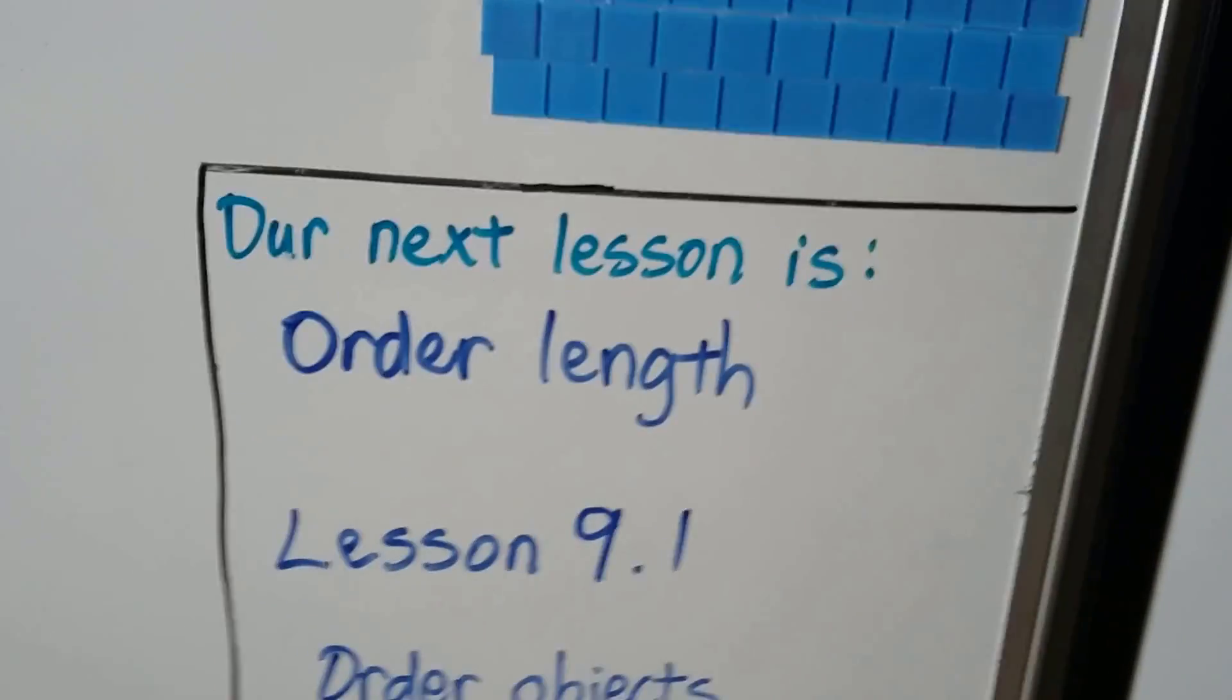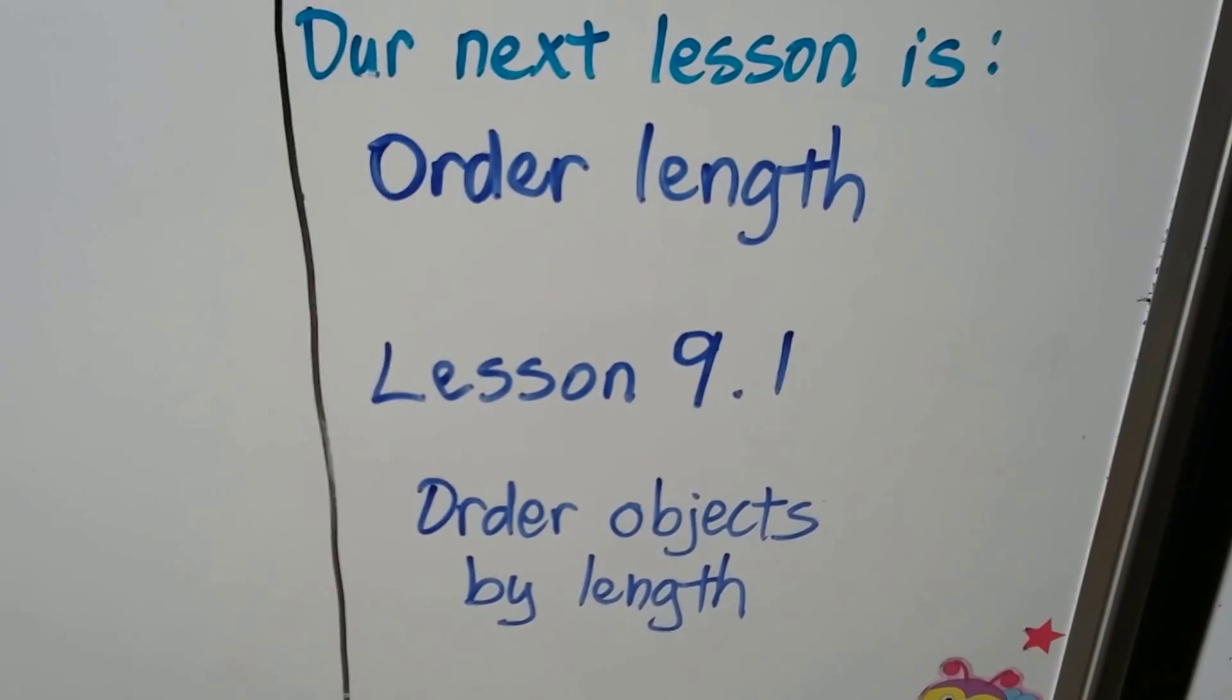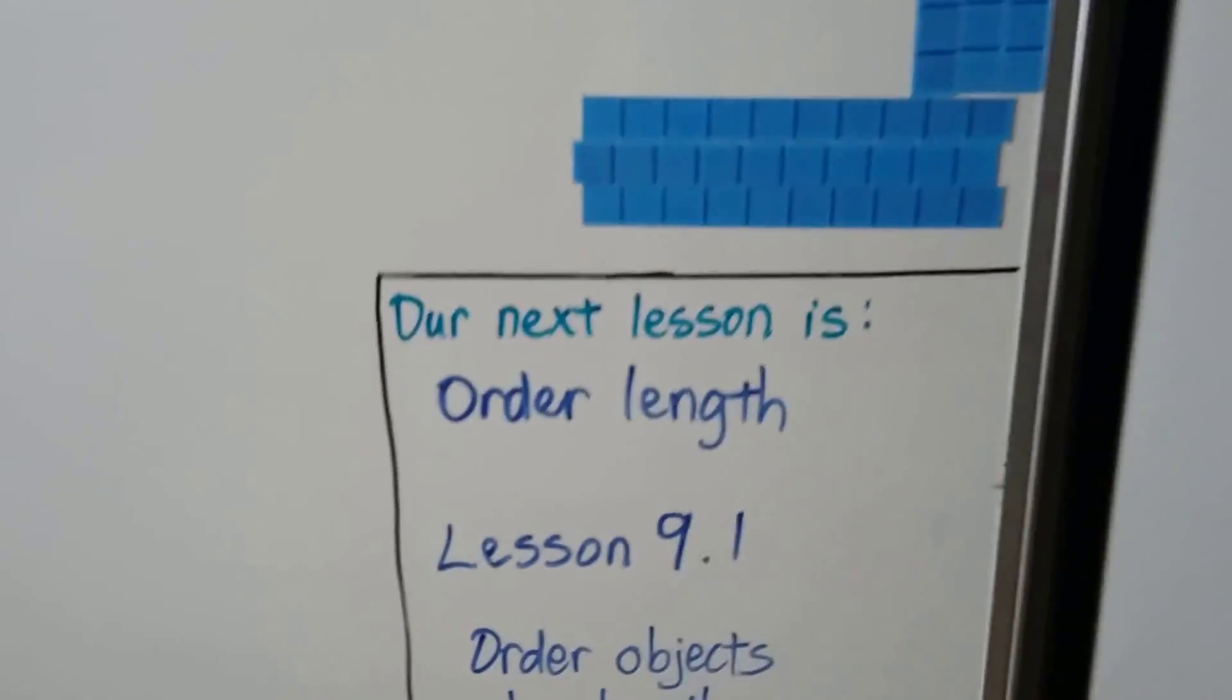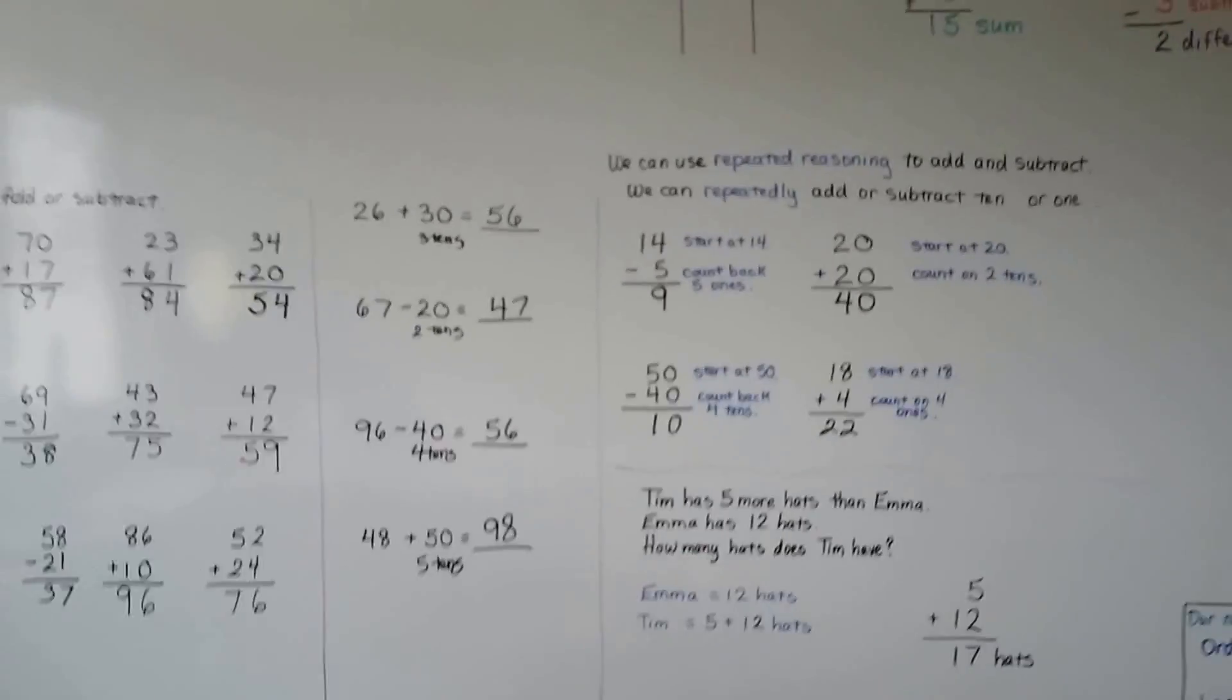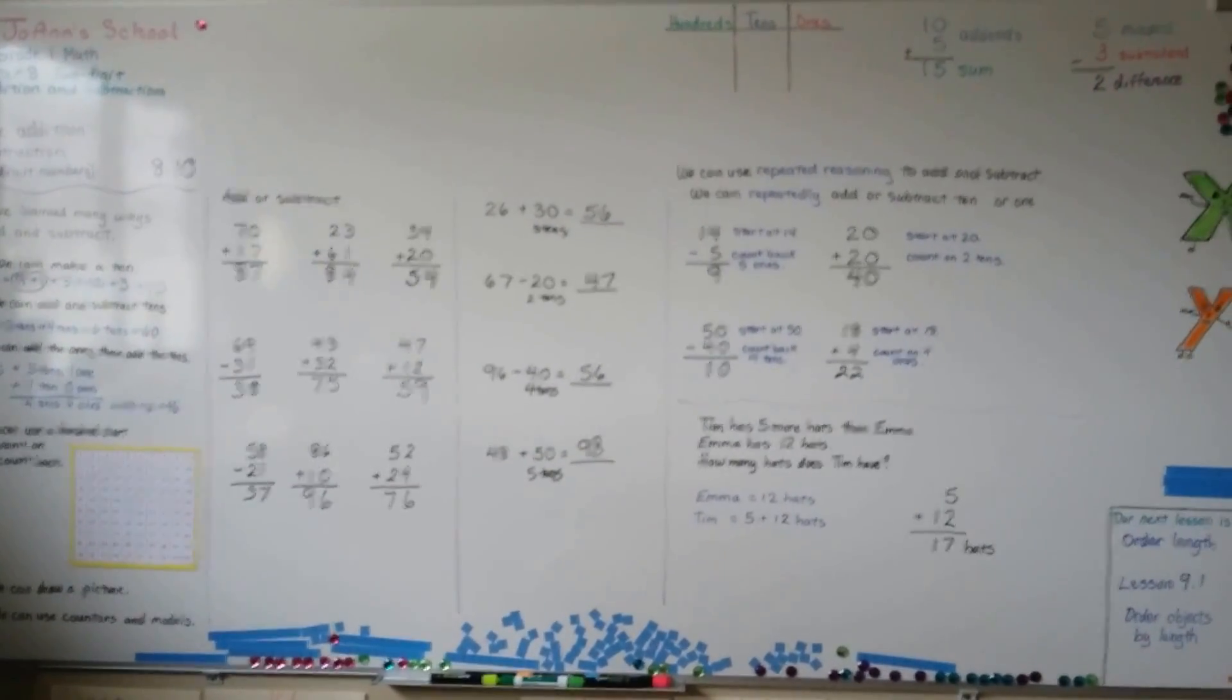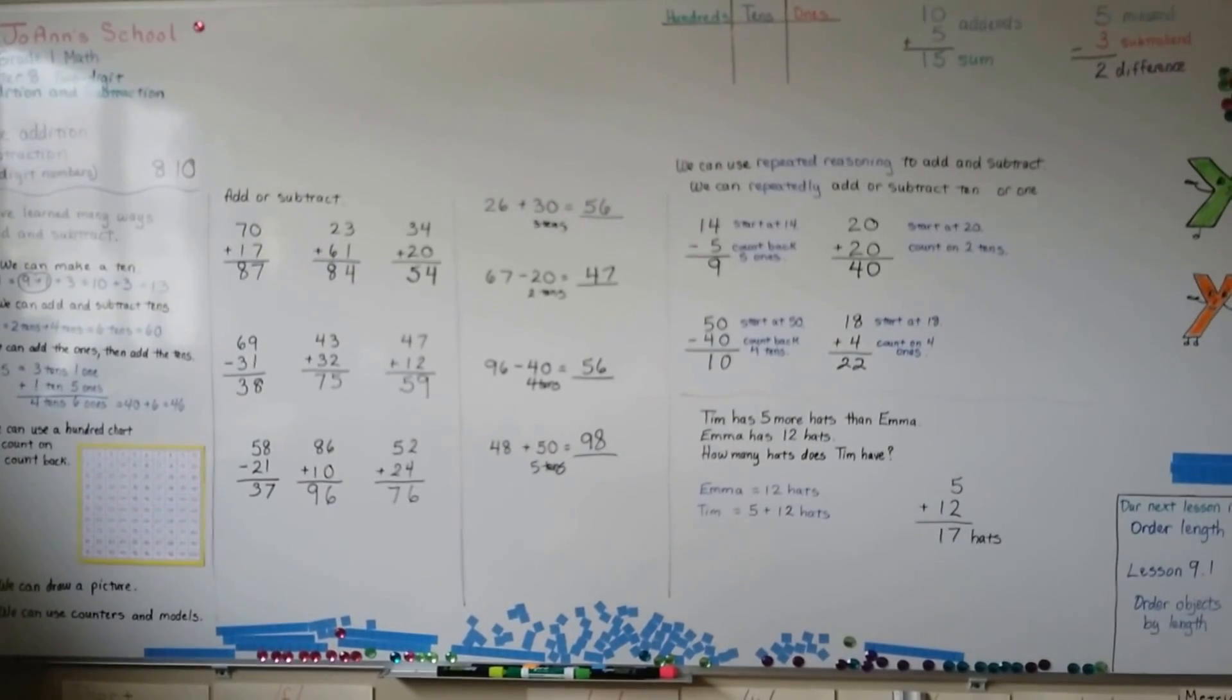Our next lesson is order length, lesson 9.1. We're going to order objects by length, by how long they are. That's a new chapter. Keep practicing your addition and subtraction facts so that you get fast and good at doing them. And I'm really proud of you and I hope you have a wonderful day. Bye.